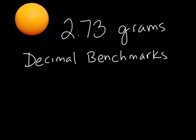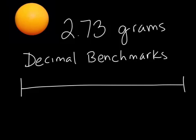To do this, we would look at 2.73 on a number line. If this is our number line, and 2 is here, and 3 is here, 2.5 would be approximately here.